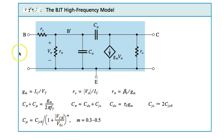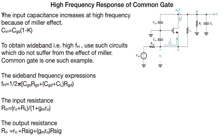Now the high-frequency response of common source: input capacitance increases at high frequency because of the Miller effect. Cin equals Cgs plus Cgd times 1 minus K. To obtain wideband high frequency, we use circuits which do not suffer from the Miller effect. Common gate is one such example. The 3dB frequency is 1 over 2π, 1 over Cgs into Rgs plus Cgd plus Cin into Rgn, where Rin equals R0 plus R signal plus Gm R0 R signal.